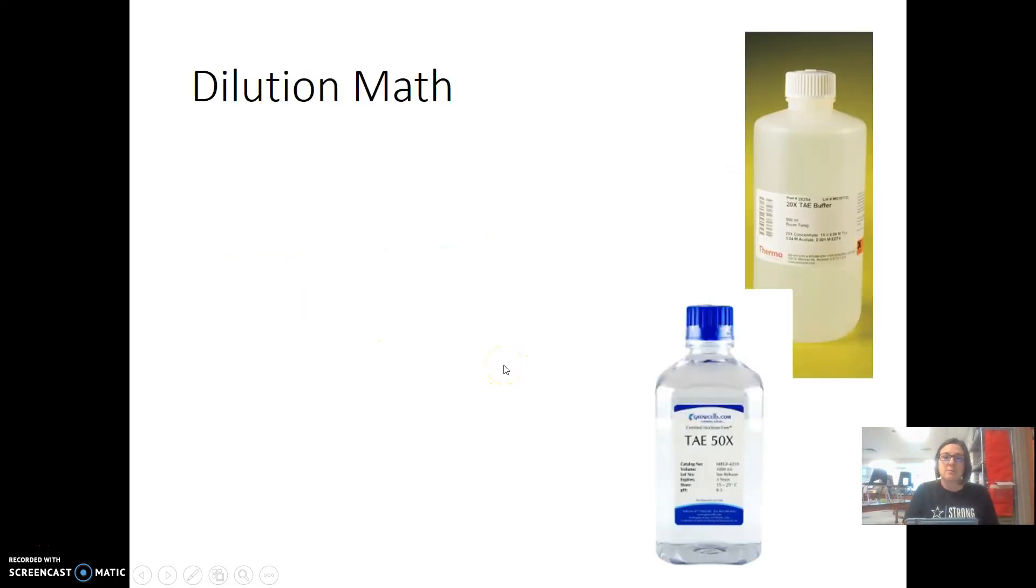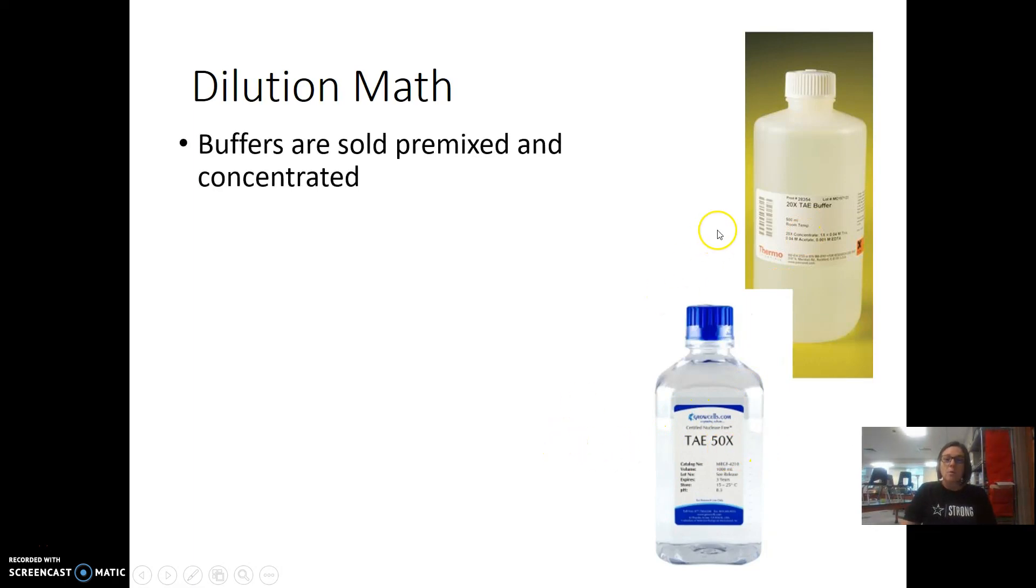So here's some examples of ones that actually get used in a lab. This one says 20X TAE buffer, so it's 20 times concentrated. This one says 50X, so it's 50 times concentrated. We like to buy our buffers this way because we're not paying for the water and we're not paying to ship all the water. We can just dilute it ourselves using water or whatever other reagents it calls for.